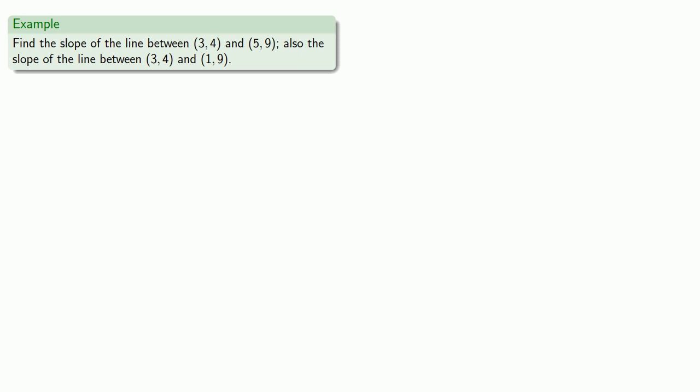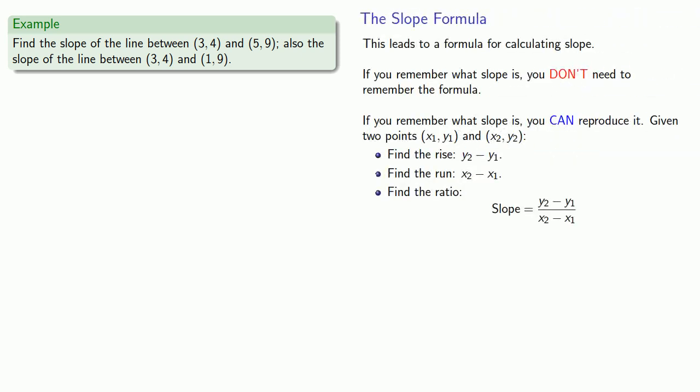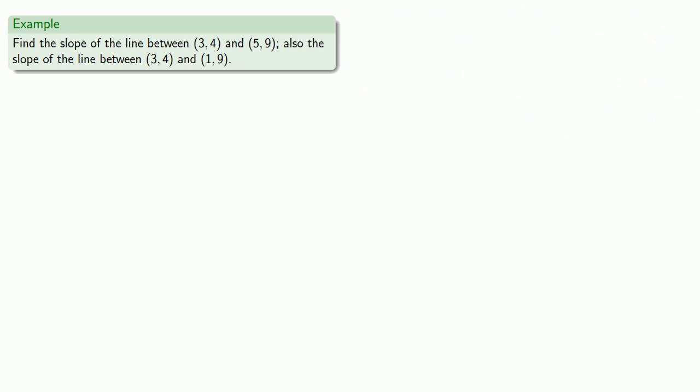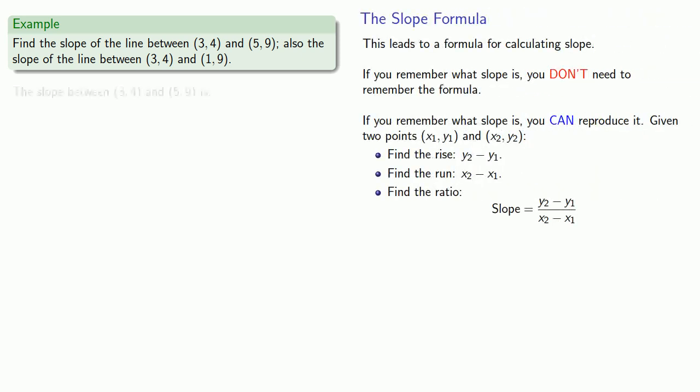Let's go ahead and calculate the slope of the line between (3, 4) and (5, 9). We'll pull in our slope formula for reference. We want to go from the point (3, 4) to (5, 9). We want to find the difference in the y values, 9 minus 4, divided by the difference in the x values, 5 minus 3. We can simplify this and get our slope, 5 halves.